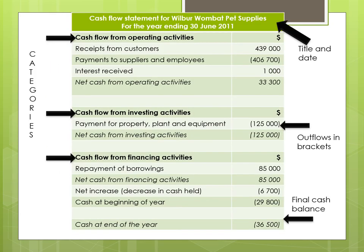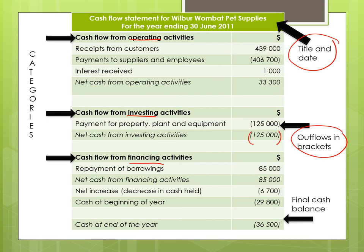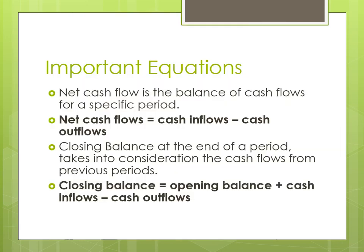This is what a year-on-year cash flow statement looks like — this one is for 2011. Key things to note: it always has a title and a date. You'll have all your different categories — operating, investing, and financing activities — with dollar signs for cash inflows and outflows. Outflows will always be shown in brackets. You'll also have a cash balance at the end of the year, which is all your inflows minus all your outflows — what we call net cash flows.